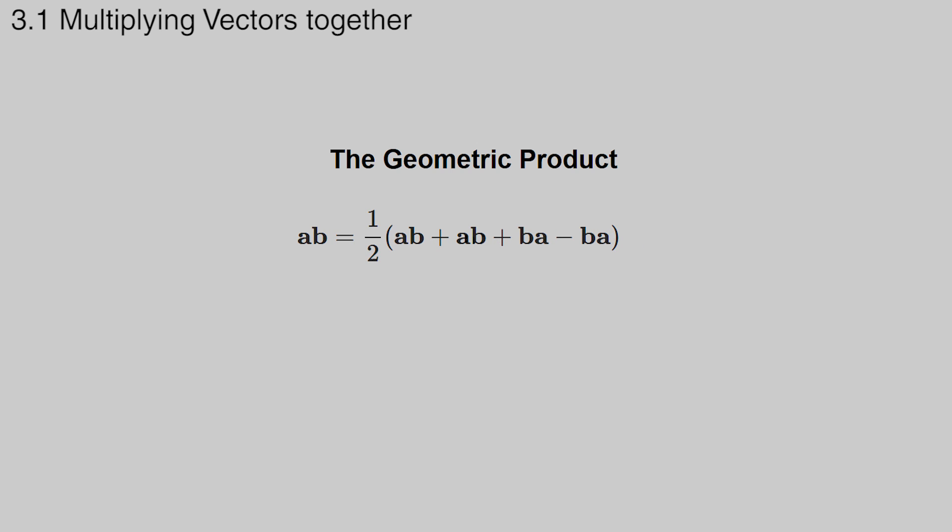To define the product, first note that it is possible to split a product, or any function that takes two arguments, into the sum of a part that does not change if we swap the arguments, and one that does change. The first term does not depend on the order of the arguments A and B anymore. It is called the symmetric part. While the second term changes sign when the arguments are swapped. It is called the anti-symmetric part. The dot product of two vectors is symmetric, and a measure of distance, so it sounds useful geometrically to set it equal to the symmetric part. Similarly, the outer product of two vectors is anti-symmetric, so it sounds useful geometrically to set it equal to the anti-symmetric part.